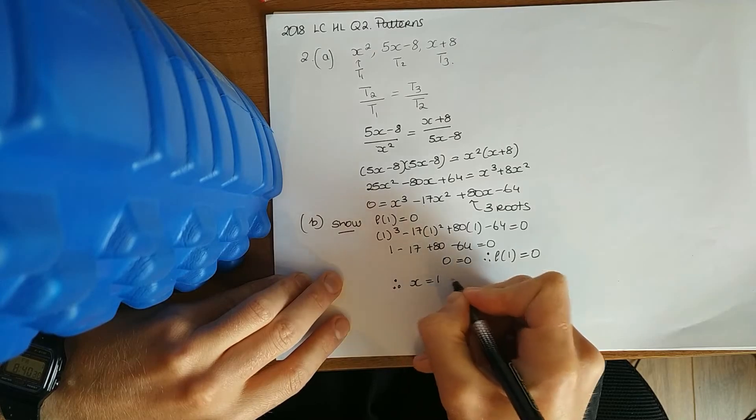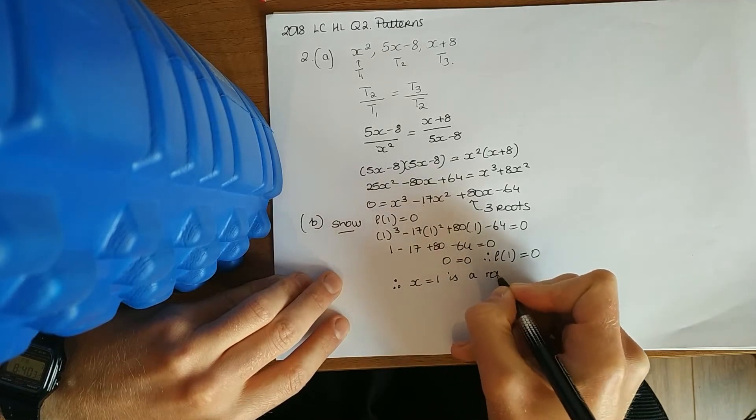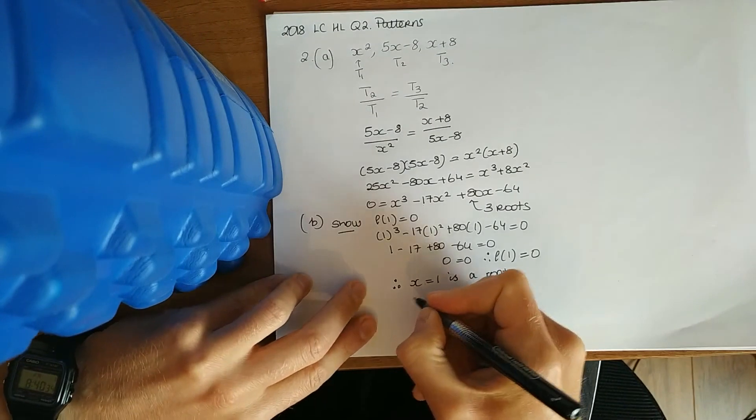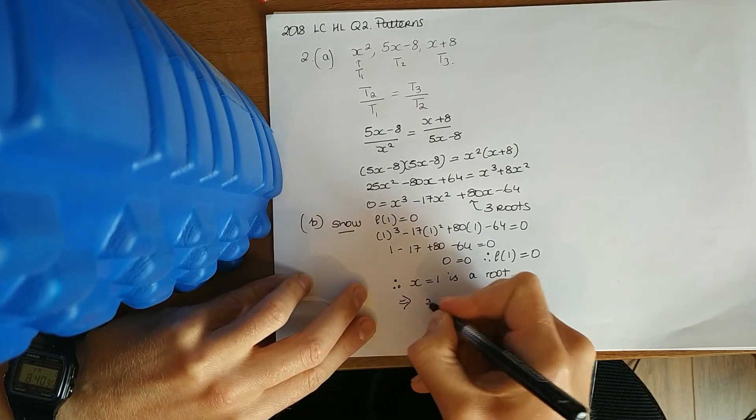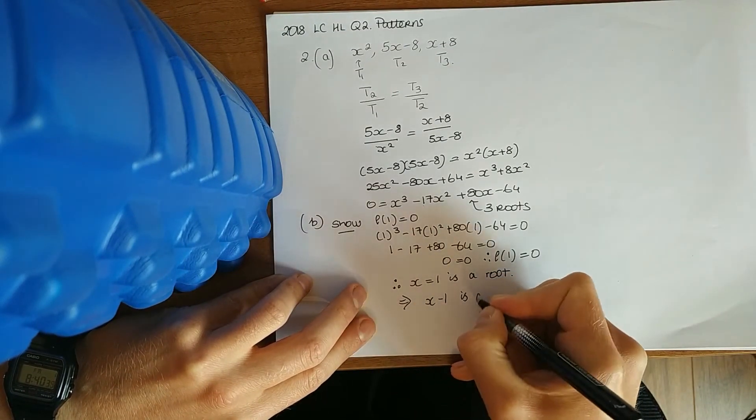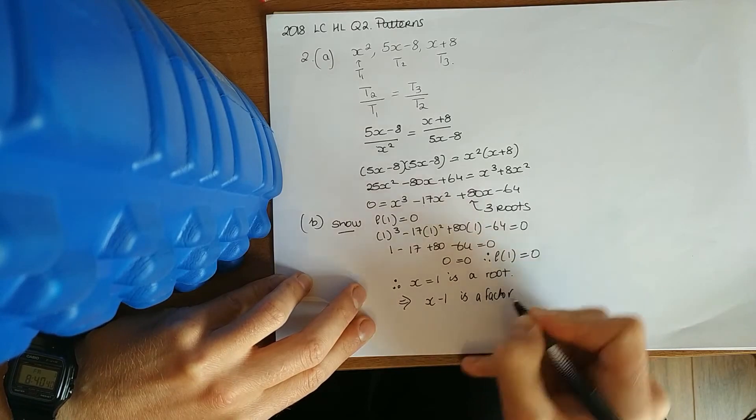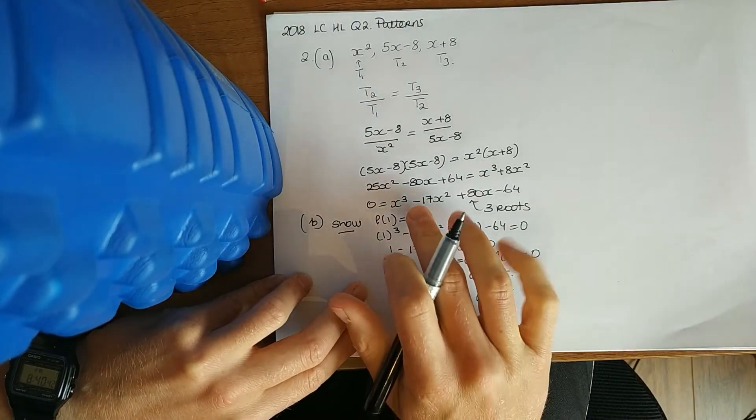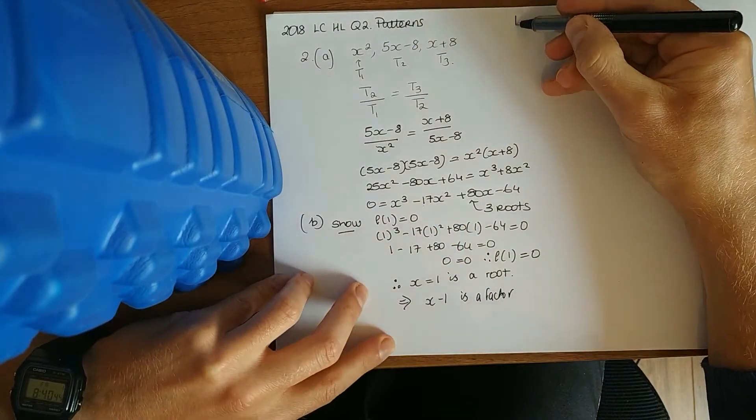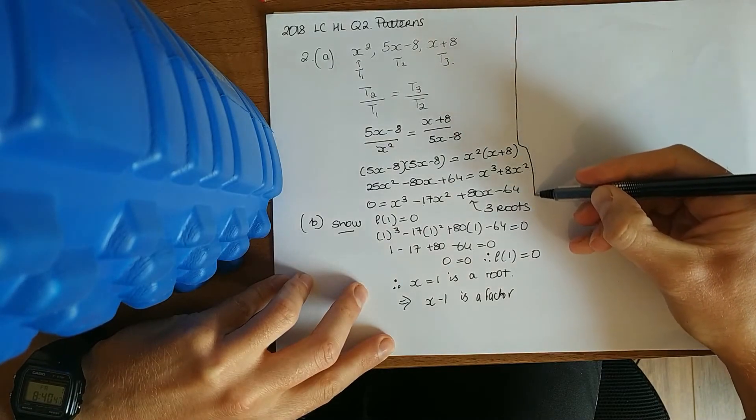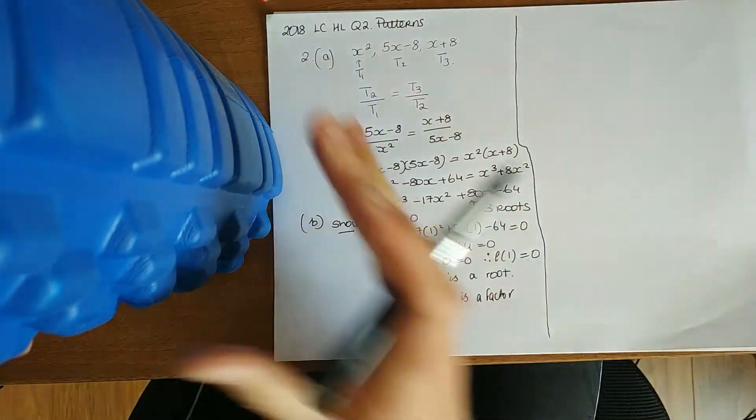So therefore x equals 1 is a root. And what you must do with that is get the factor of it. So if x equals 1 is a root, that implies that the factor is x minus 1. So then we're going to do long division of that into our cubic, and we should get the remaining two roots. We'll get a quadratic, and then we can solve the quadratic to get the remaining two roots.